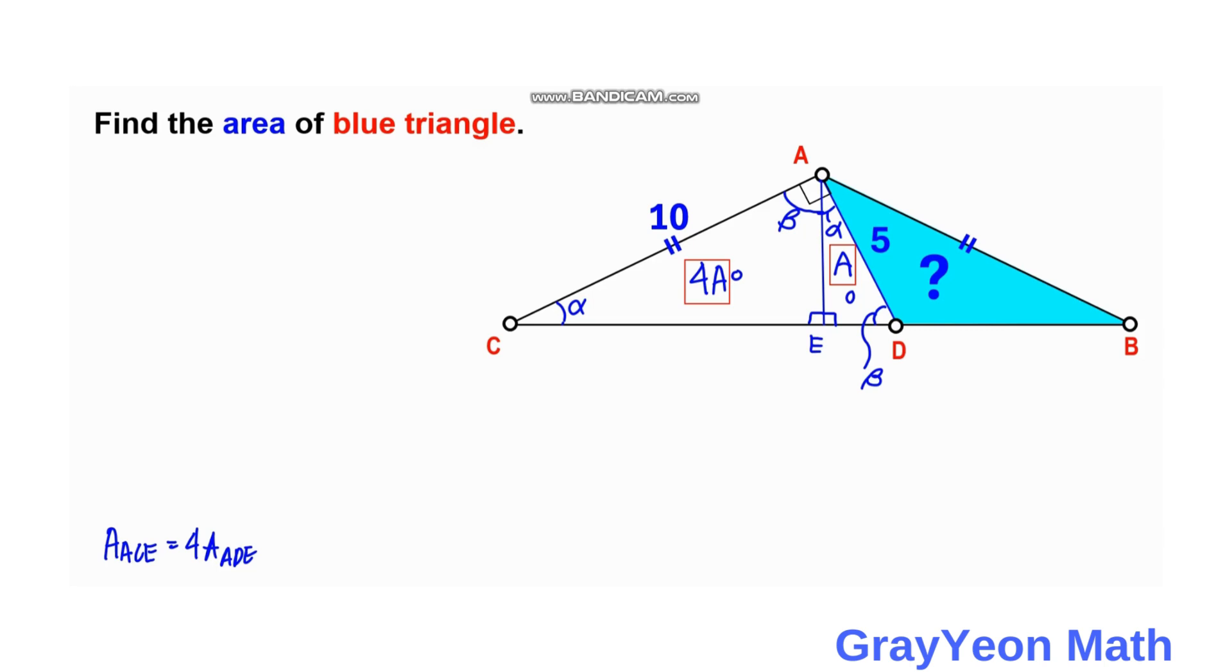Next, we can now write an equation about the area of ADB. So ADB, it is equal to area of ABE minus area of this AED. So this portion ABE minus this white part, the AED, or AED.